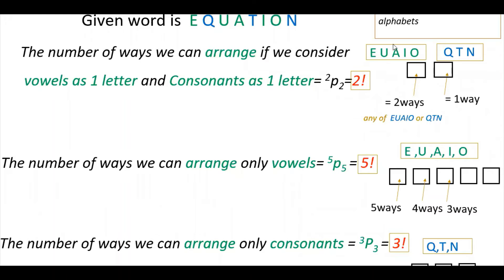Now, if all the vowels are written together in one place, we can arrange them in any order. For example, E, U, A, I, O can be arranged with any letter first. The vowels are five in total, so we have 5 boxes, and for the first box any of the 5 letters can go, then 4 remaining, then 3, 2, and finally 1. That is 5P5, which equals 5 factorial.